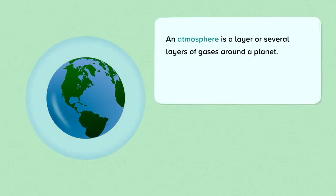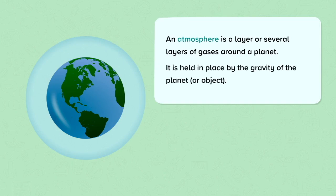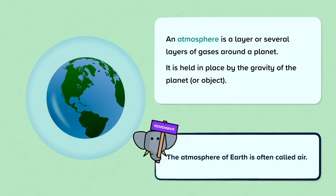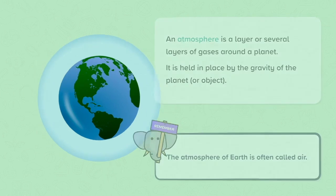An atmosphere is a layer or several layers of gases around a planet or other large objects in space, like a moon. It is held in place by the gravity of the planet or the object. It is important to remember that the atmosphere of Earth is often called air.